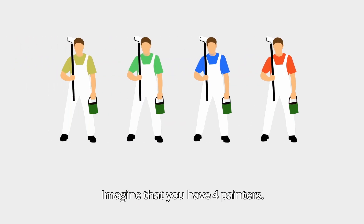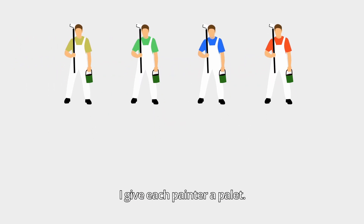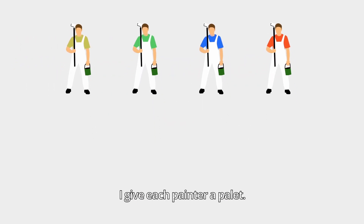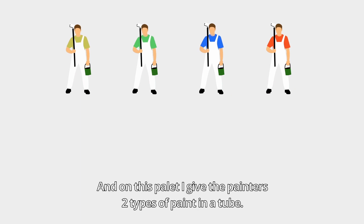Imagine that you have four painters and I give every painter a palette, and on this palette I give every painter two types of paints in the tube.